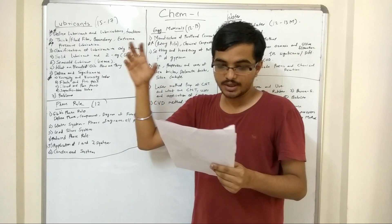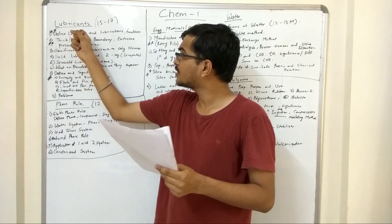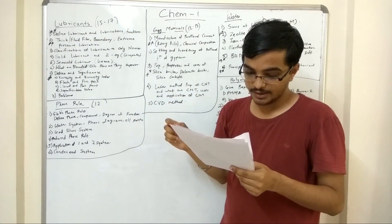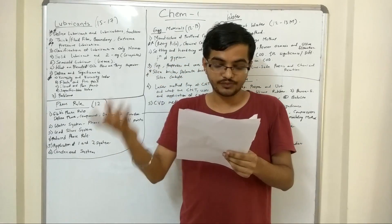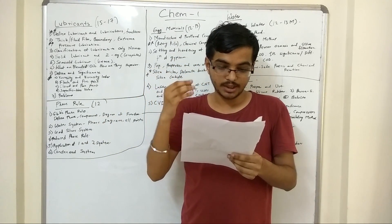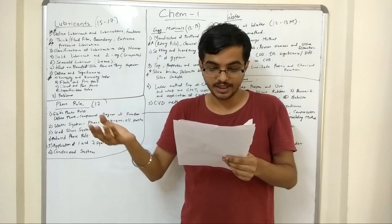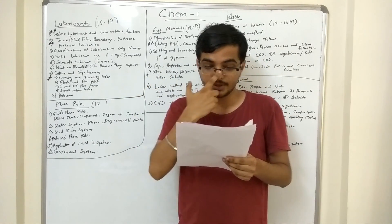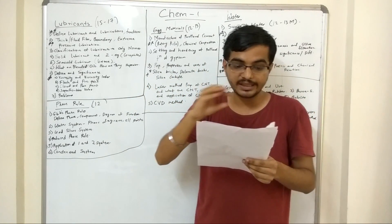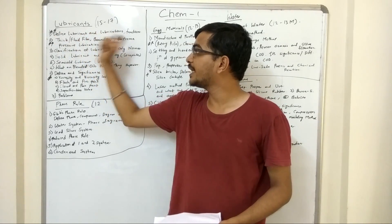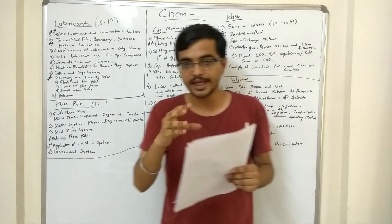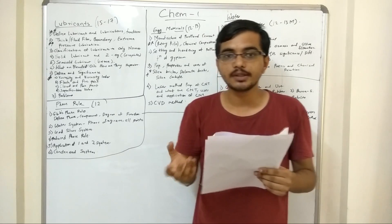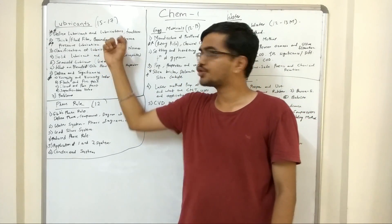The next important question is generally on thick film, fluid film, boundary, and extreme pressure lubricants. They can ask: discuss the mechanism of thick film lubrication, or explain fluid lubrication with the help of a diagram, or discuss the boundary film lubrication mechanism. This question is generally seen in every paper. They might ask any of these - not very difficult. If you draw the diagram once, it's all about remembering 8 to 10 points.